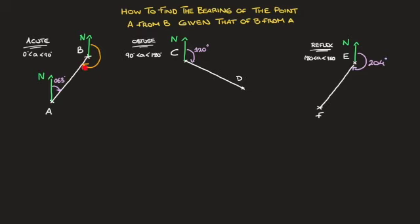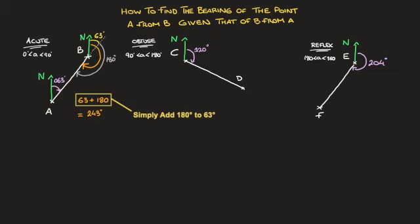To find this angle, we extend the line segment AB with a dotted grey line. Since both northern lines are parallel, the angle the northern line makes with the dotted grey line and the 63-degree angle are corresponding and equal angles, so that angle is 63 degrees. Since angles along a line add up to 180 degrees, the bearing we're looking for is 63 plus 180, which equals 243 degrees — the bearing of point A from point B.